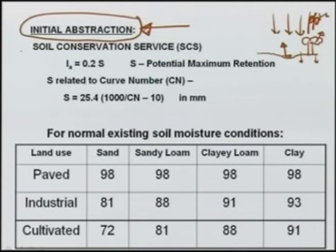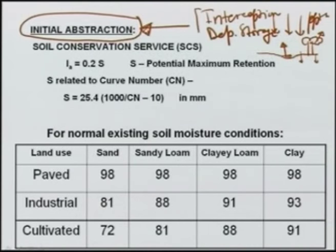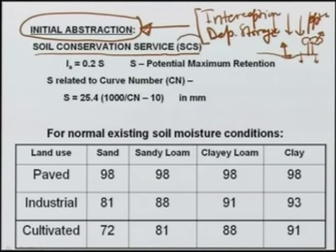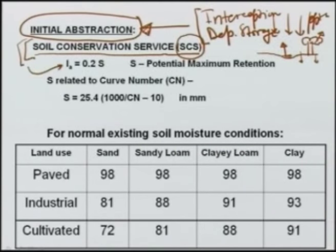In the initial abstraction, we typically include interception and depression storage. The soil conservation service of the US (SCS) has proposed a technique to estimate this, because it is very difficult to estimate. Initial abstraction depends on many factors which change from place to place and from storm event to storm event. A rough estimate can be made by the SCS method, in which the initial abstraction is taken as 20 percent of S, where S is the potential maximum retention.